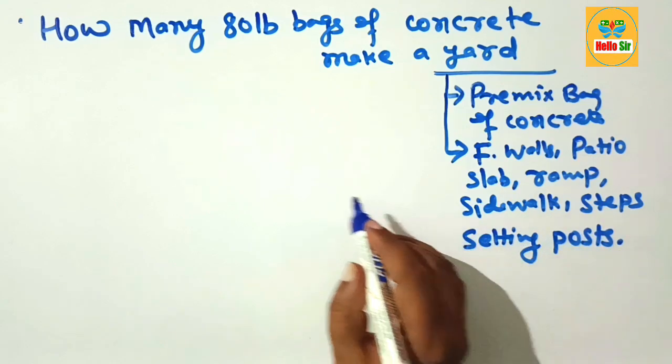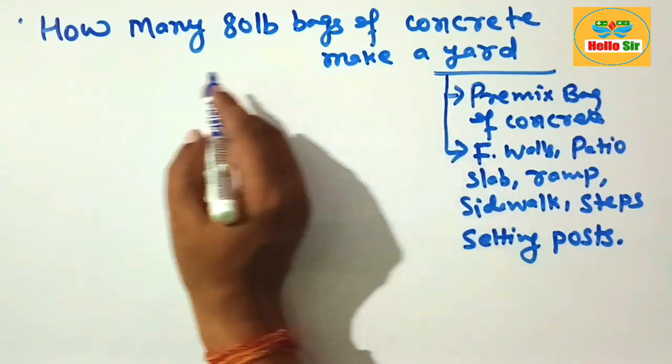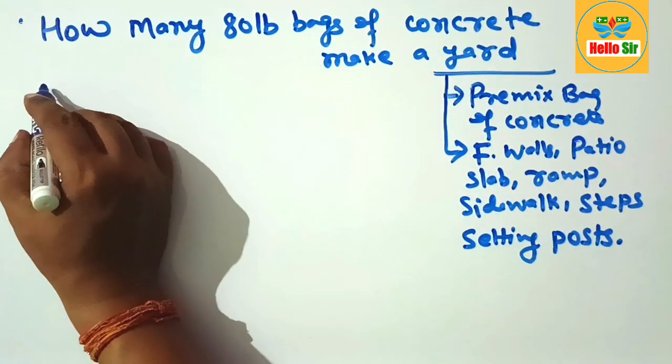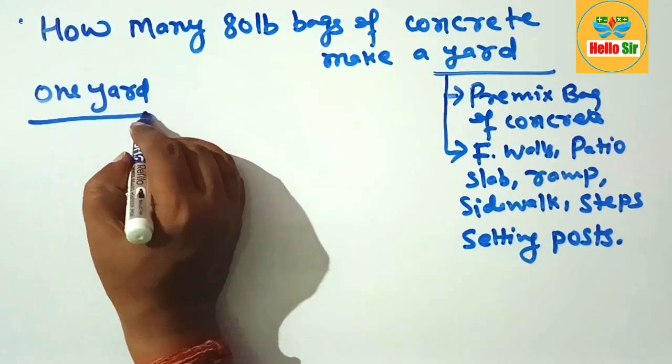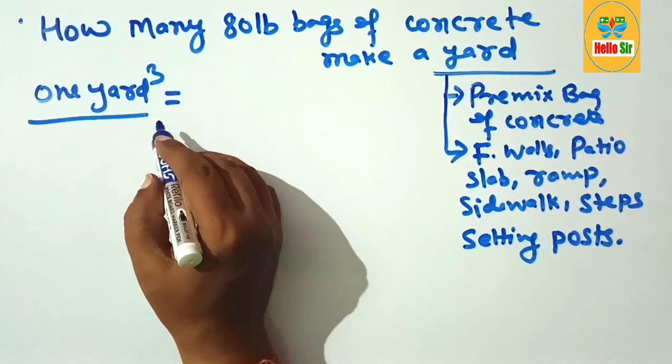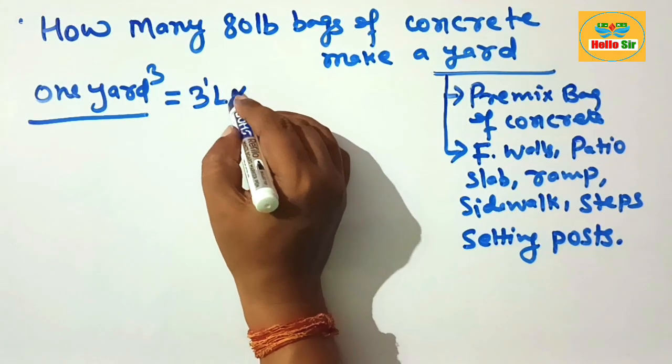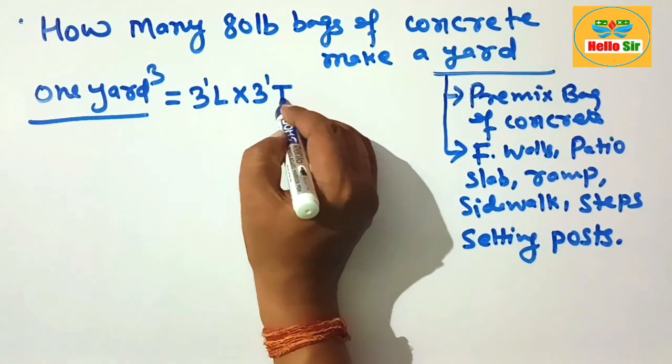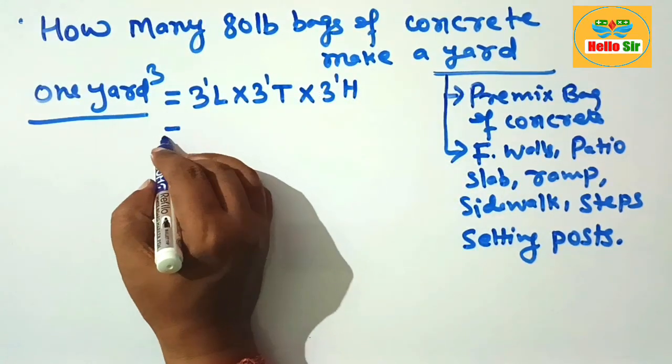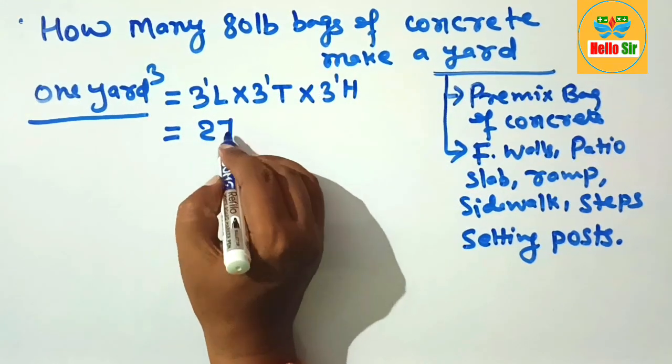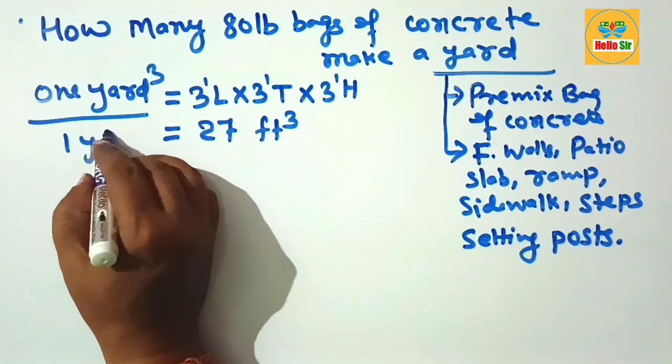The 80 pound bags of concrete make one cubic yard. One cubic yard of concrete equals three foot in length times three foot in thickness times three foot in height. If you multiply all this, it comes to about 27 cubic feet. It means one cubic yard of concrete equals 27 cubic feet volume.